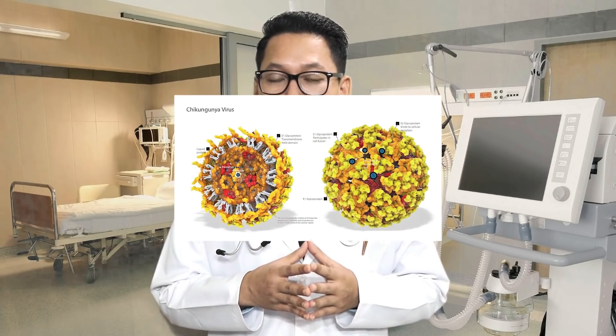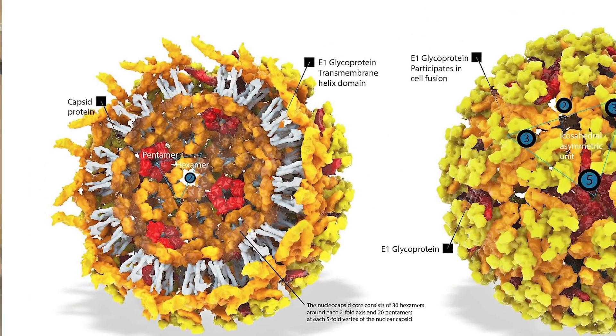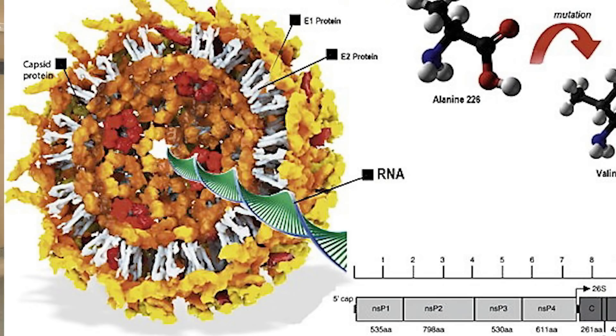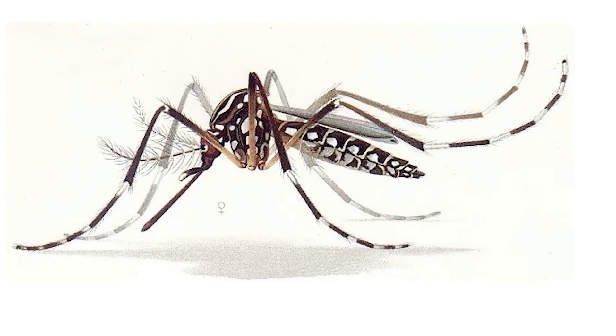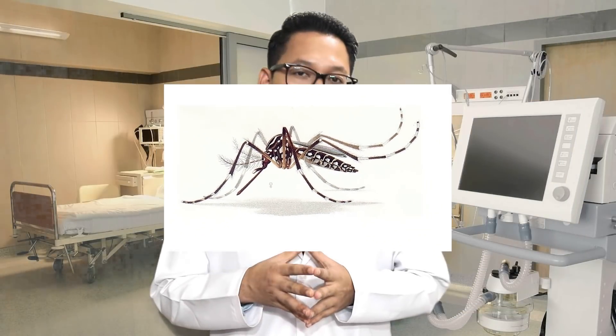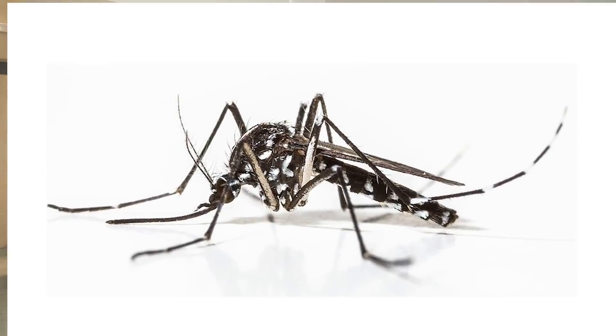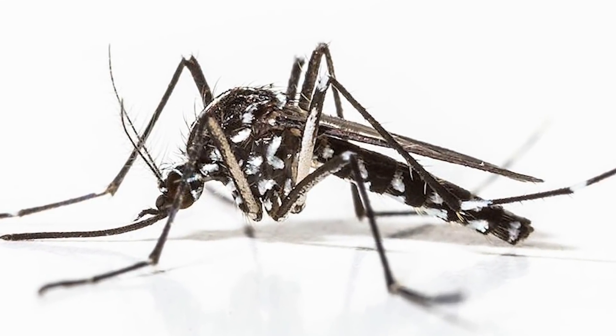Chikungunya is caused by the Chikungunya virus, an RNA virus that belongs to the Alphavirus genus of the family Togaviridae. The virus is transmitted from human to human by the bites of infected female Aedes mosquitoes, more commonly Aedes aegypti — which is also responsible for the spread of dengue fever, Zika fever, and yellow fever — and Aedes albopictus, also known as the Asian tiger mosquito.